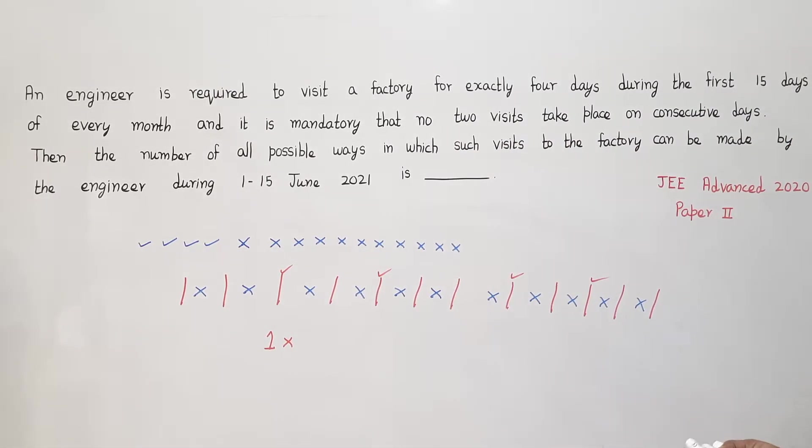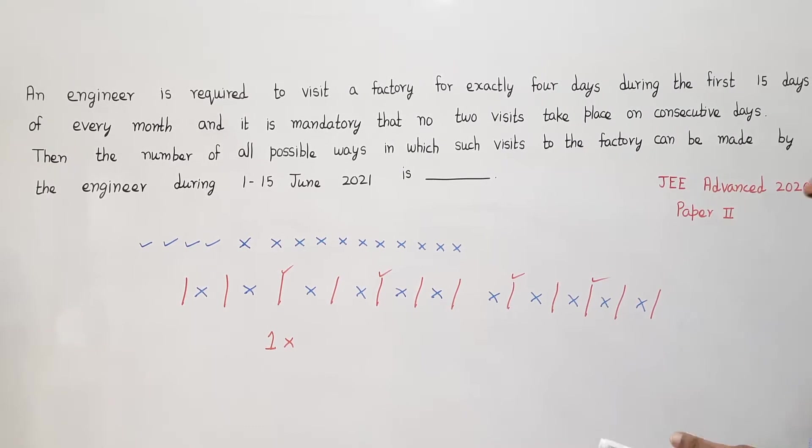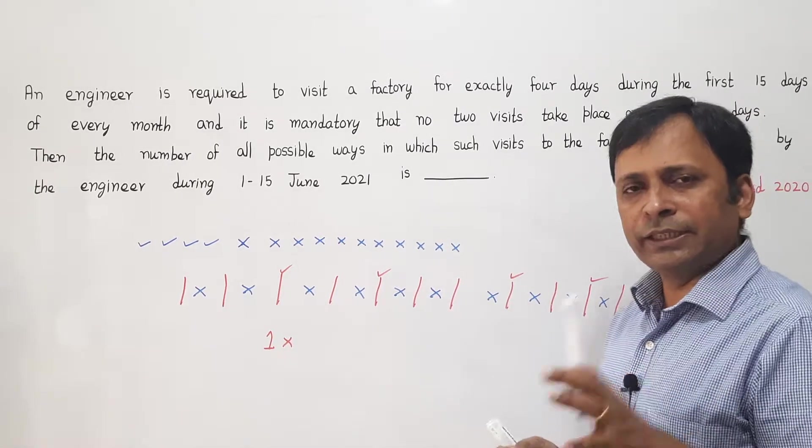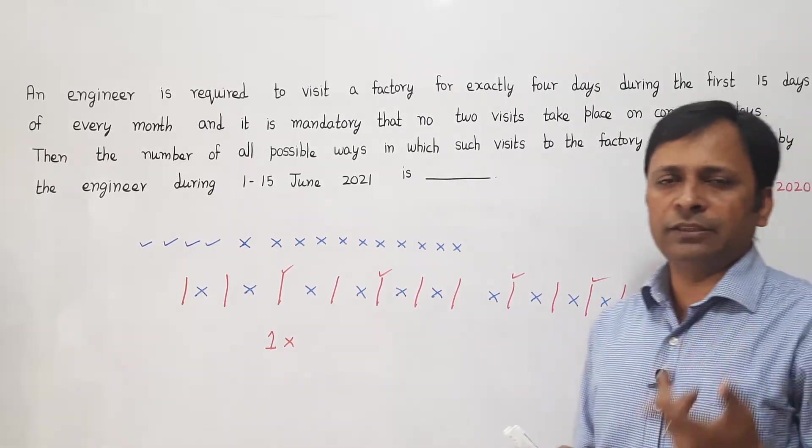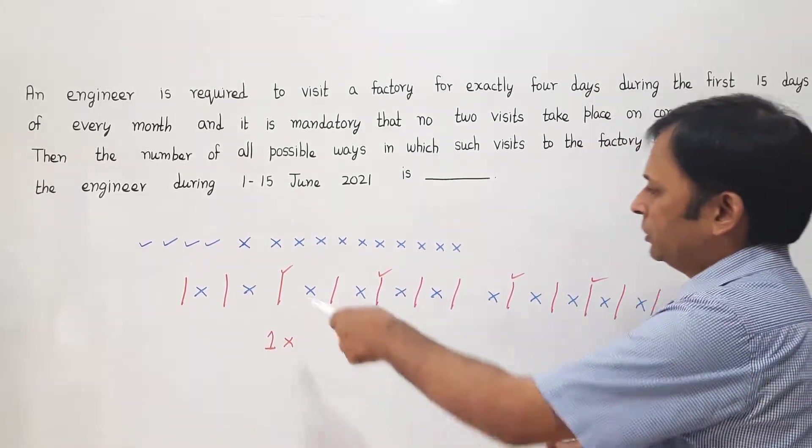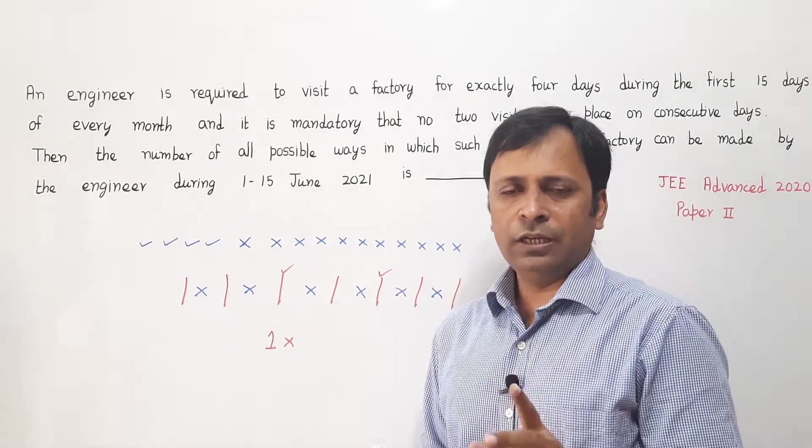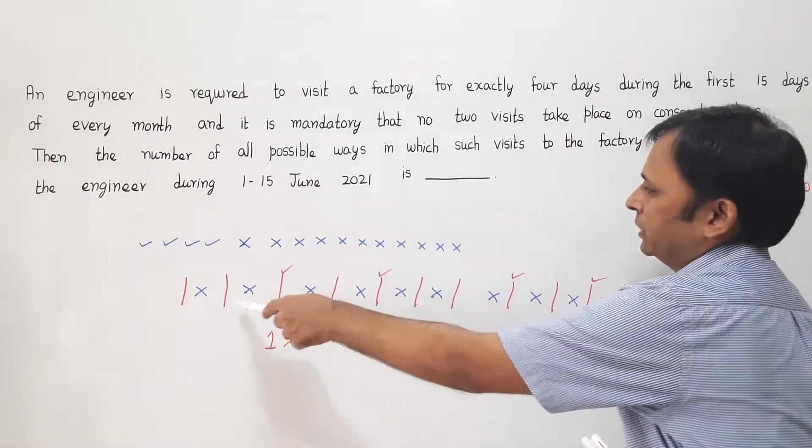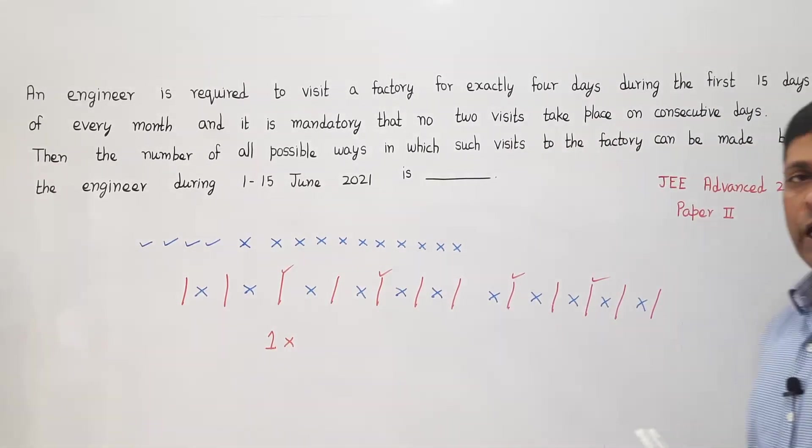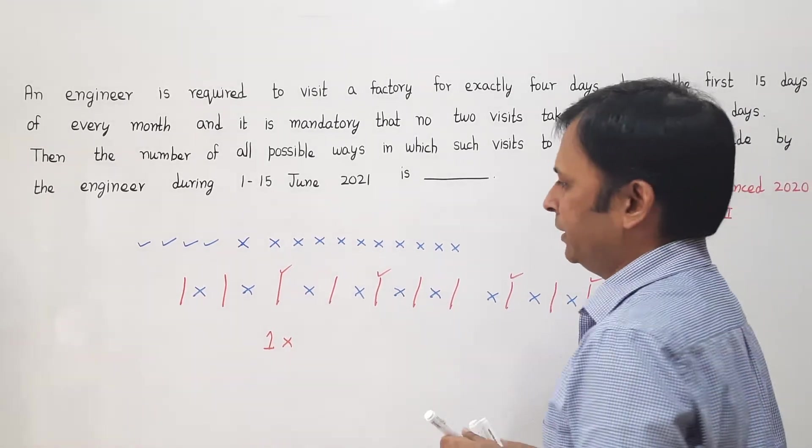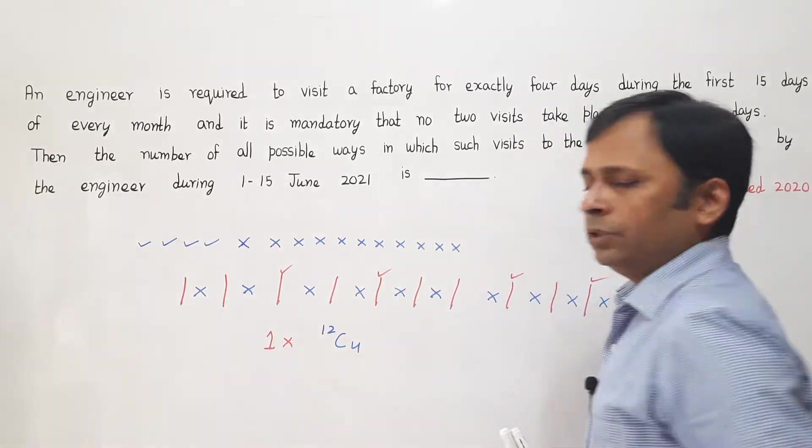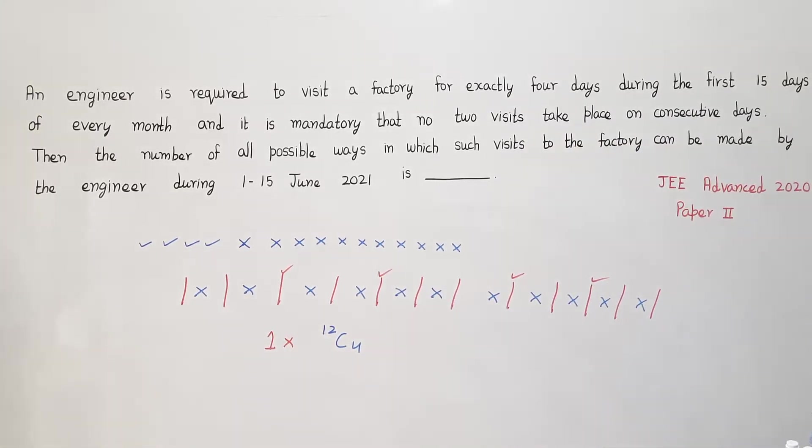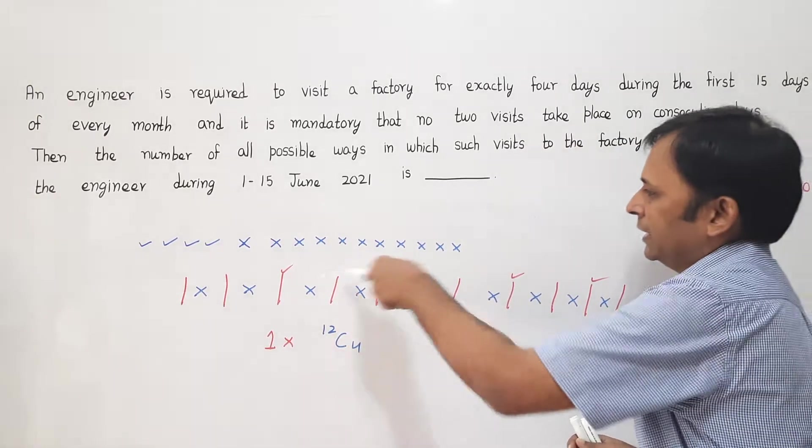Then the next thing is I have to select where to place the ticks. I have already decided that out of these 12 positions which I have marked, I have to select any 4 positions. That can be done in 12 C 4 ways. So in 12 C 4 ways, I will do the selection of ticks.